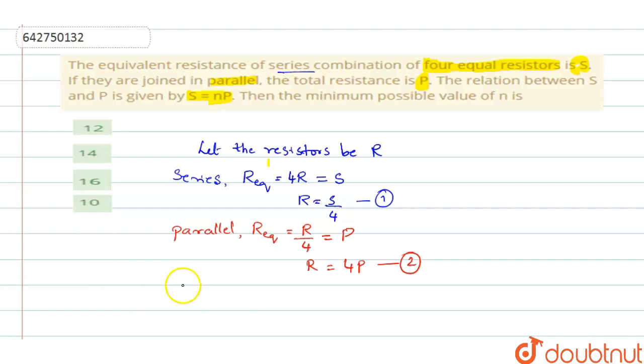Now equating equation 1 and 2. What you can get? LHS of those two are equal. So you can equate from 1 and 2. You can write it as S by 4 is equal to 4P. So from this, S is equal to 16P.